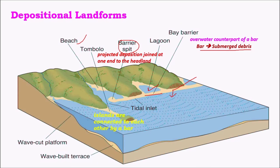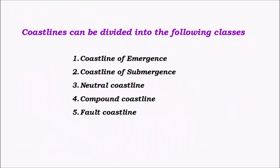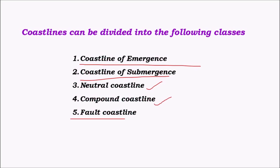Coastlines are classified into different categories: coastline of emergence, coastline of submergence, neutral coastline, compound coastline, and fault coastline. Based on the presence or absence of emergence and submergence, coastlines are further categorized.